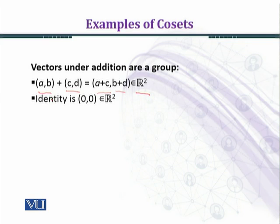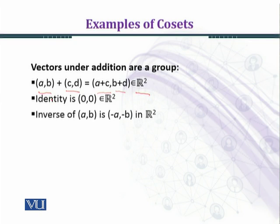Now we check whether the identity element is in R² or not. We choose (0, 0) belonging to R². If we take an arbitrary element in R² and add the identity element to it, we get the same element back. So the ordered pair (0, 0) is the identity in R².